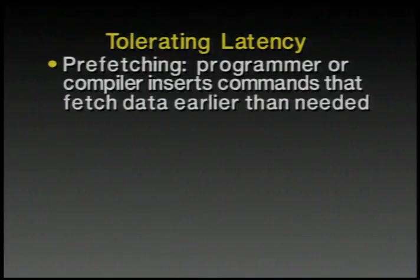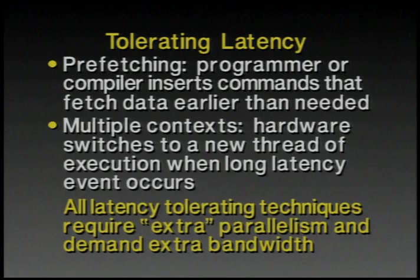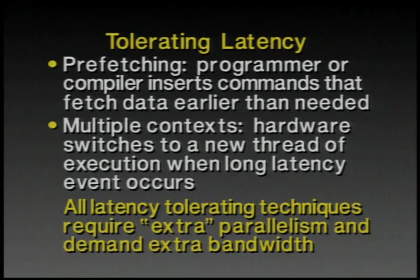Two other ways to tolerate latency are prefetching and multiple context. In prefetching, the programmer or compiler inserts instructions to bring data from a remote location to a nearby location, reducing its access time. In multiple context, the machine is designed so that when a long latency event occurs, the processor context switches to another thread of execution, overlapping that event with useful work. Importantly, all latency-tolerating techniques require extra parallelism and generate extra bandwidth demands on the machine.